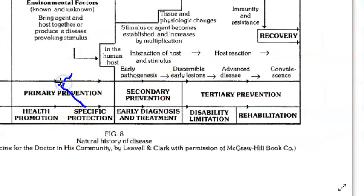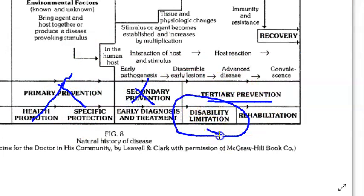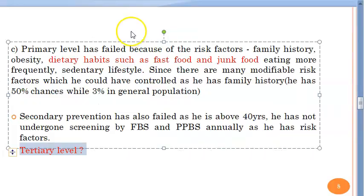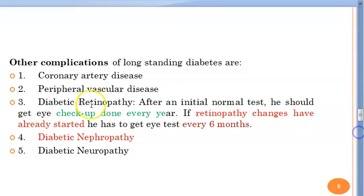Since primary and secondary prevention have failed, and he already has eye complications, we are now at the tertiary prevention stage. The goal is to limit disability and rehabilitate him. Some disability has likely already occurred, but tertiary prevention can still help to some extent.